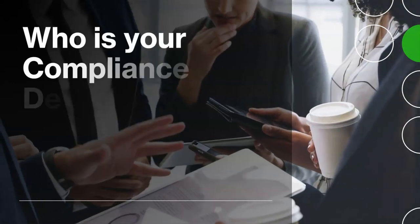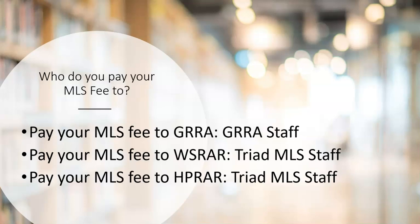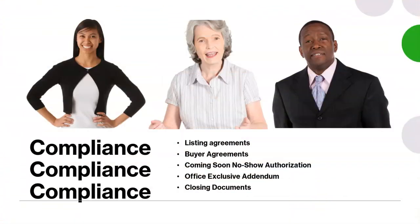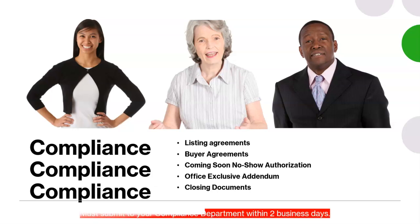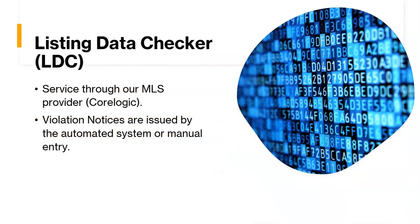Who is your compliance department? That is determined by who you pay your MLS fee to. Those paying GRRA, the GRRA staff is your compliance department. While those paying HPRAR or WSRAR, your compliance department is the Triad MLS staff. Not only does compliance mean following all the Triad MLS rules, but also requires submitting documentation when requested within two business days of the request. LDC, the Listing Data Checker System, is the automated system designed to validate the quality and accuracy of listing data.